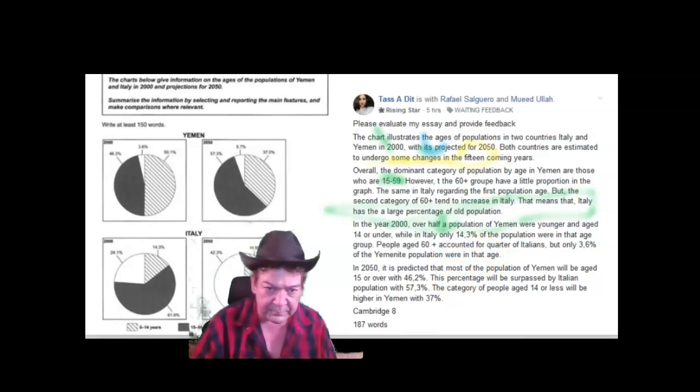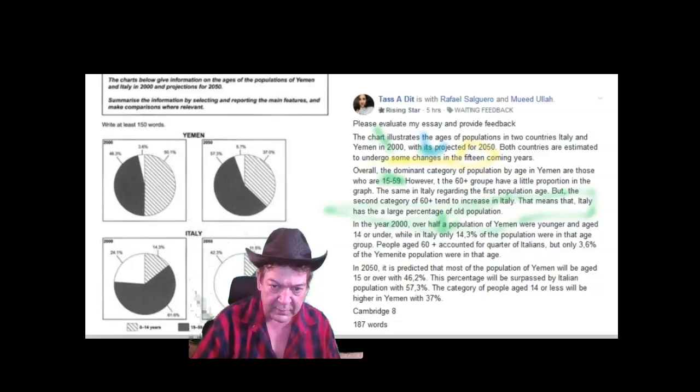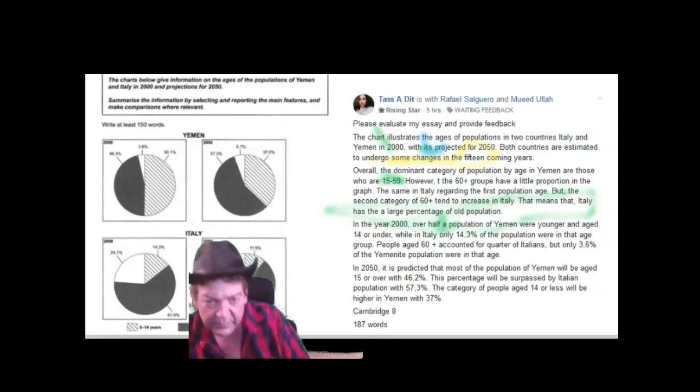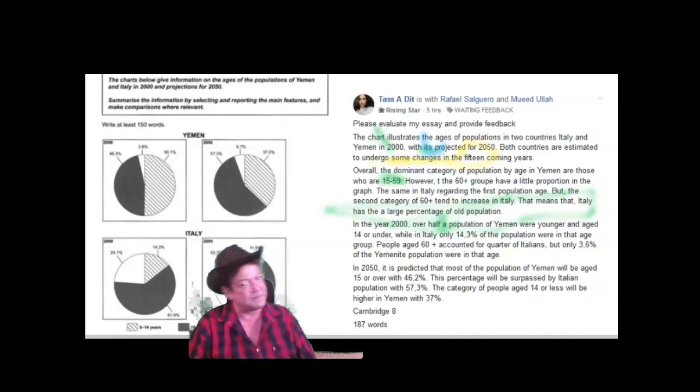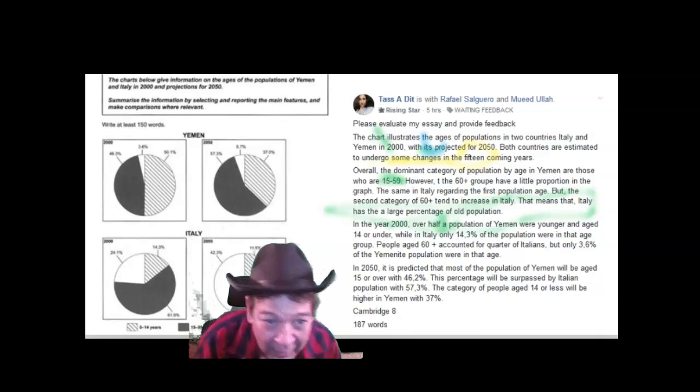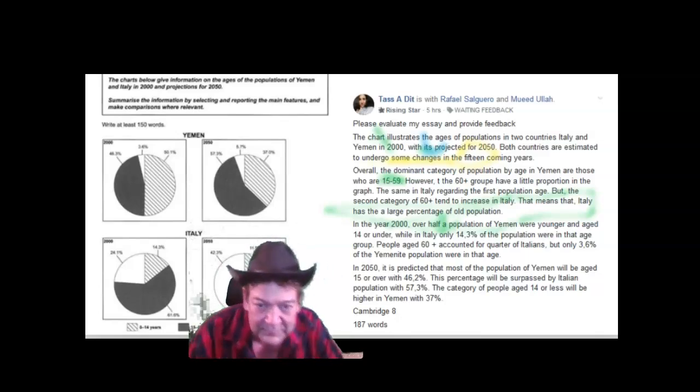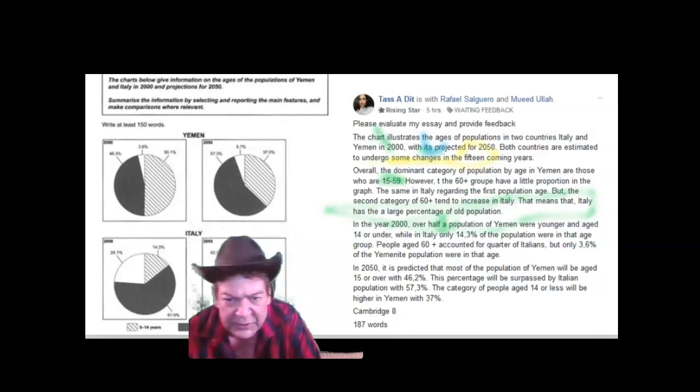In 2050, it is predicted that most of the population of Yemen will be aged 15 or over with 46.2%. No, not 15 or over, because there's another category of the elderly. This percentage will be surpassed.